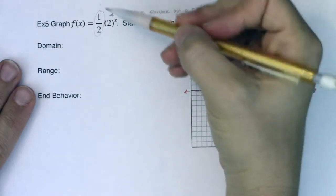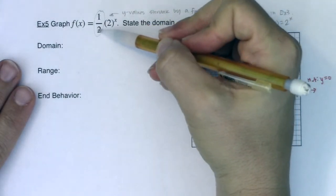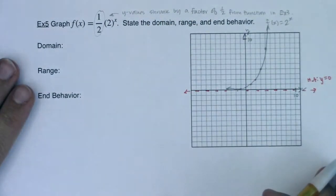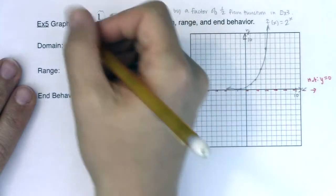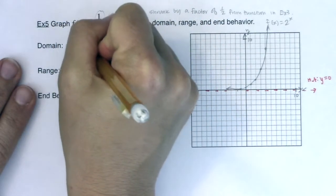My domain. I actually do have a fraction this time out. I have a fraction of 1 half, but that denominator is never 0, so I don't need to worry about it. I've got no radicals. I've got no logarithms. So my domain is all real numbers.